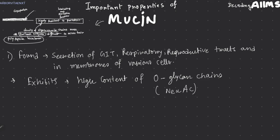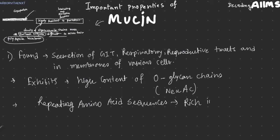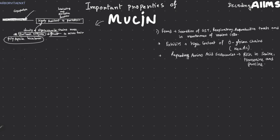Mucin contains repeating amino acid sequences that are rich in serine, threonine, and proline. The extended structure of mucin contributes to its high viscoelasticity.